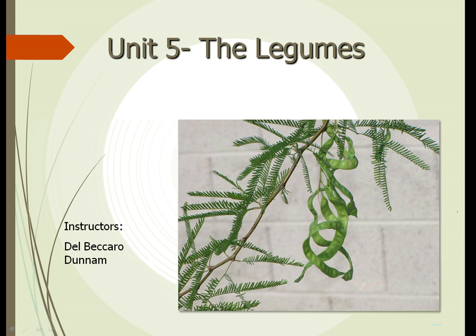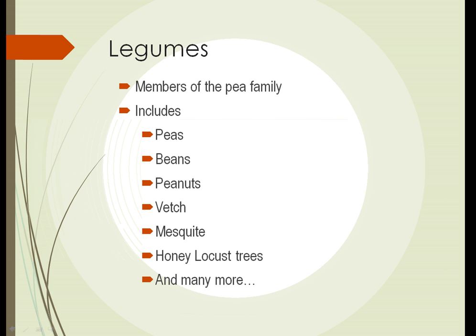The legumes, unit 5. Legumes are members of the pea family and include peas, beans, peanuts, vetch, mesquite, honey locust trees, and many, many more plants.